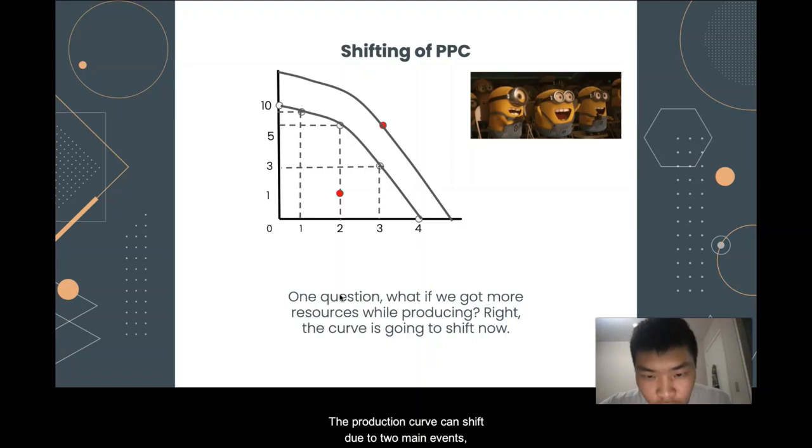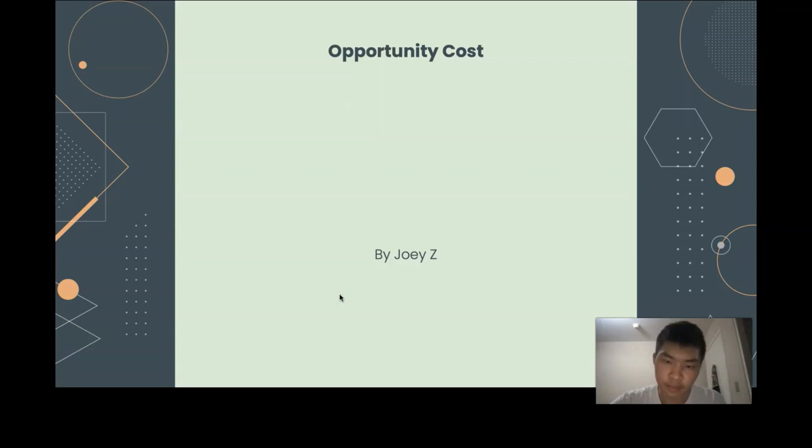The production curve can shift due to two main reasons. Number one is changing quantity and quality of resources. Number two is improvement of technology. The red dot that was impossible in the last slide discussed, now is possible because of better technology and changing quality and equality.